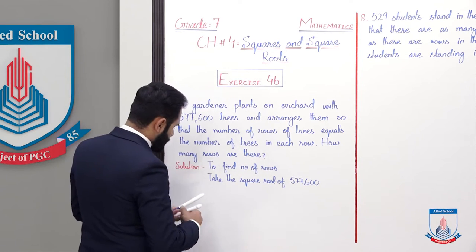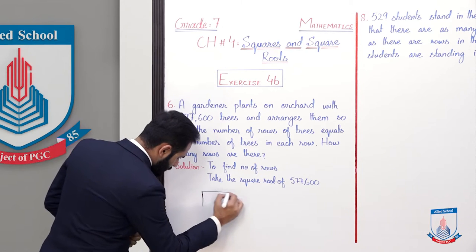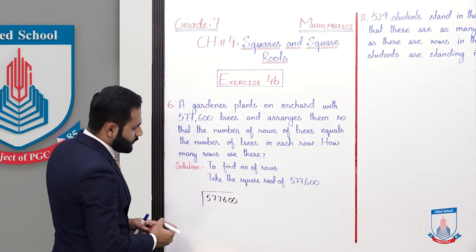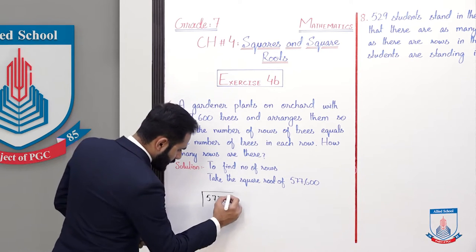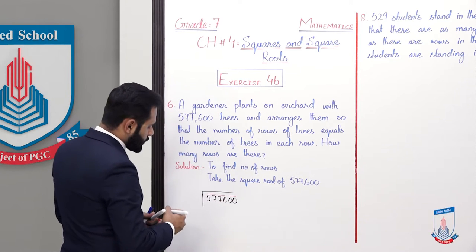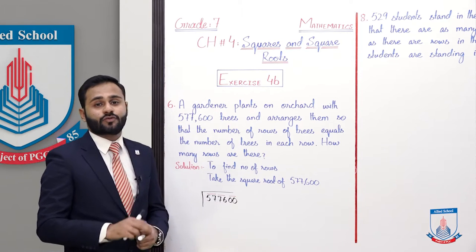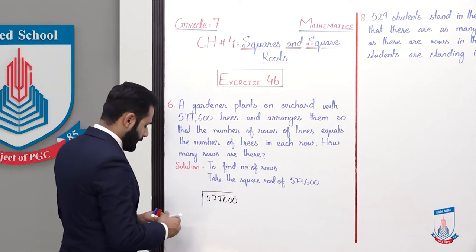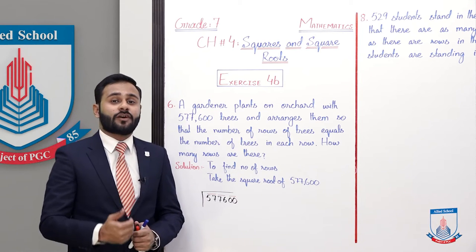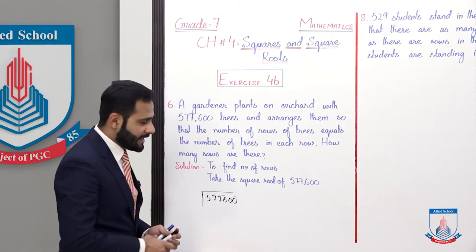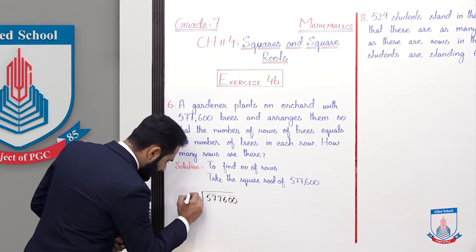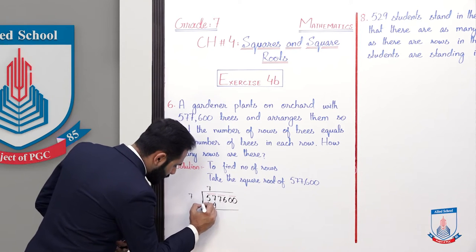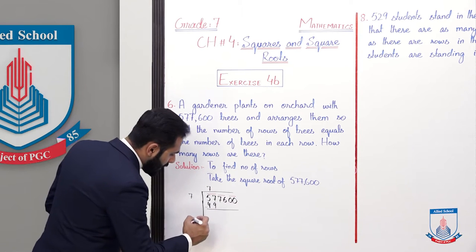So let's find the square root by long division method. We write 57,600 and first of all we make pairs. For 57, the nearest perfect square is 49, which is 7 squared. So we divide: 7 into 7 becomes 49. Subtract: 57 minus 49 equals 8.